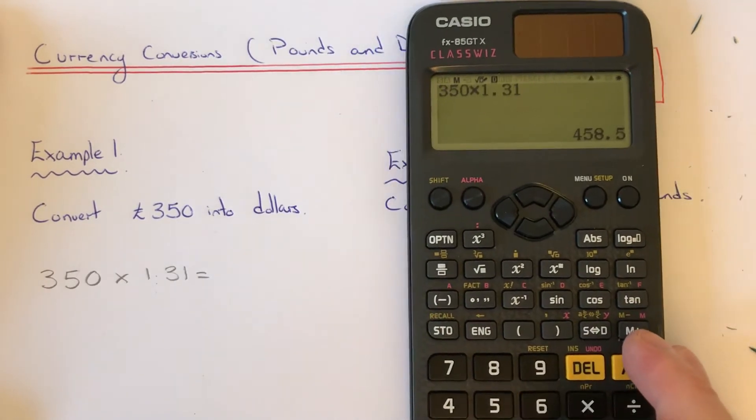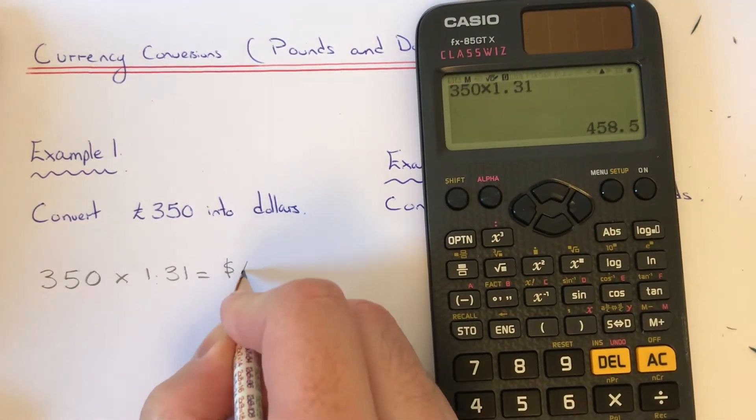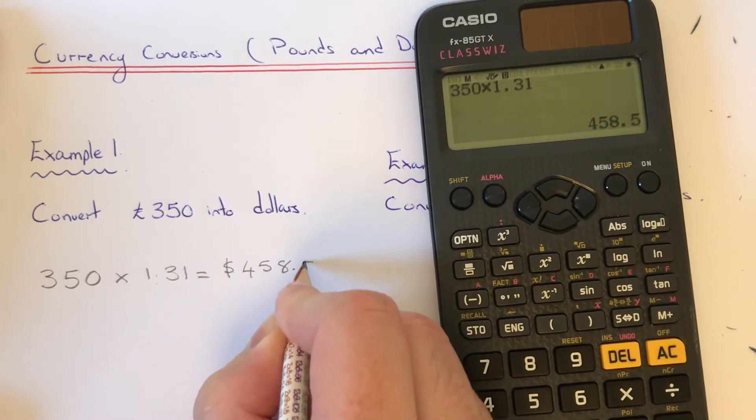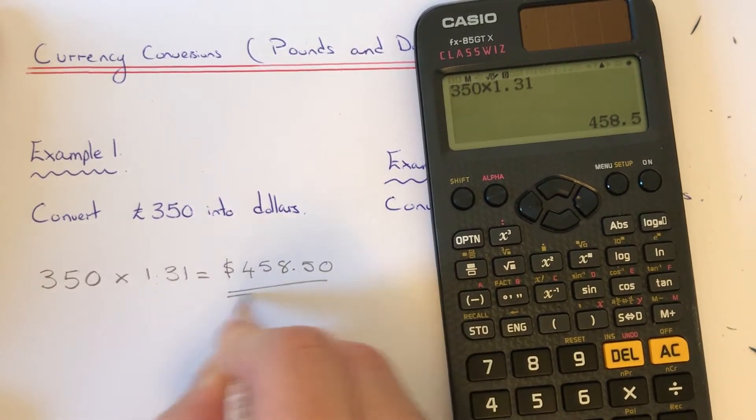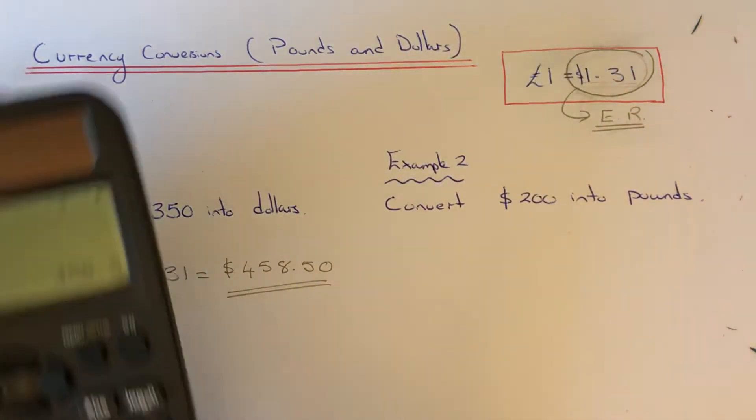...and we get four hundred and fifty-eight dollars and fifty cents. So notice when it's in the foreign currency dollars, the amount is slightly higher than what it is in pounds. So let's have a look at our second example.